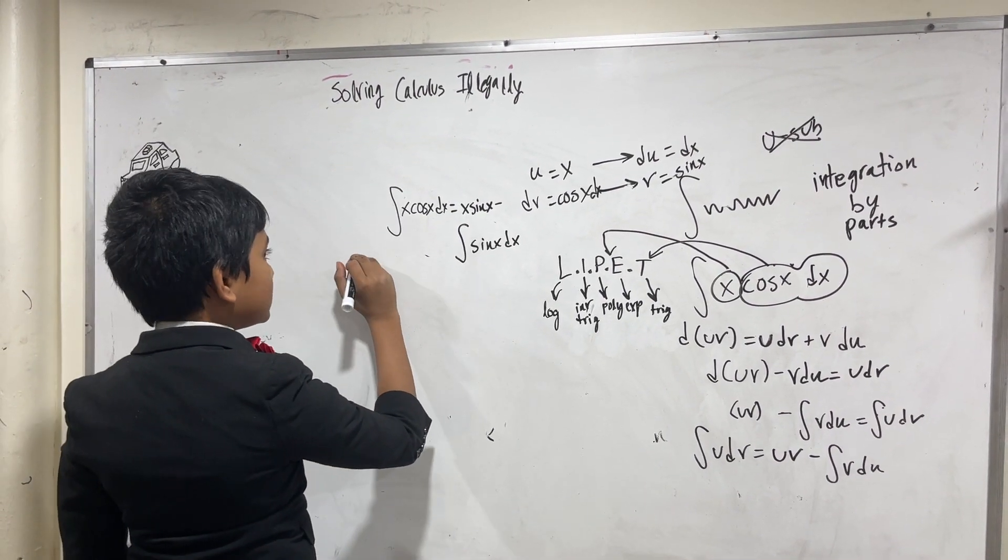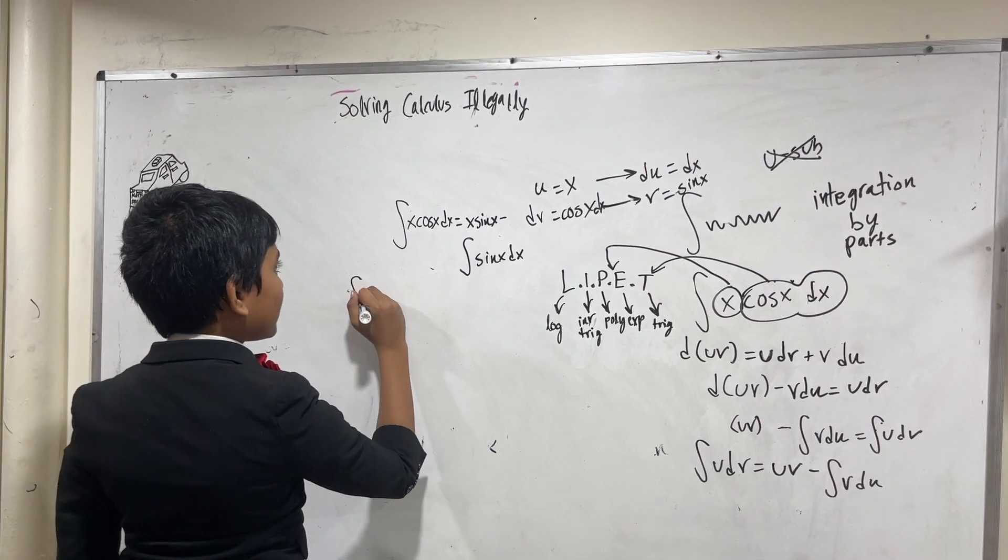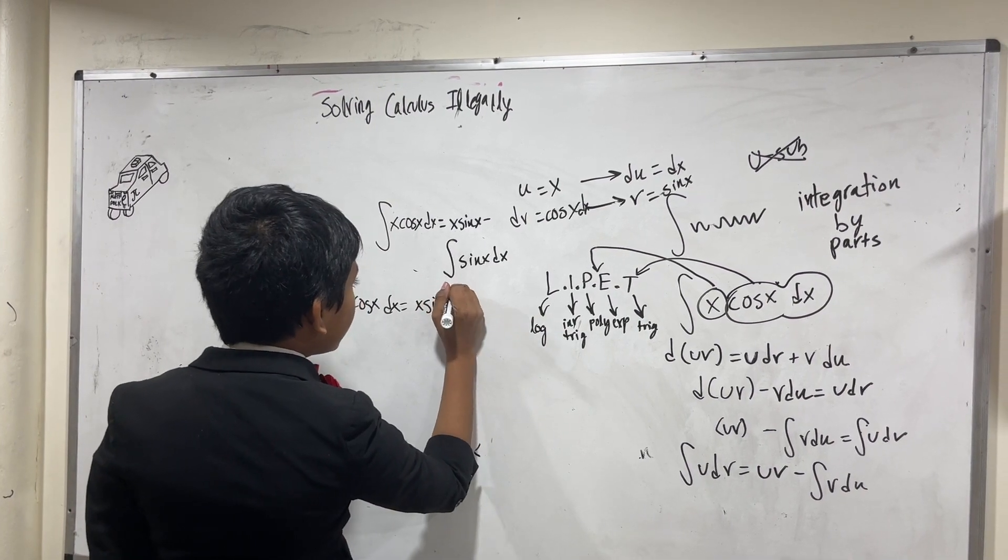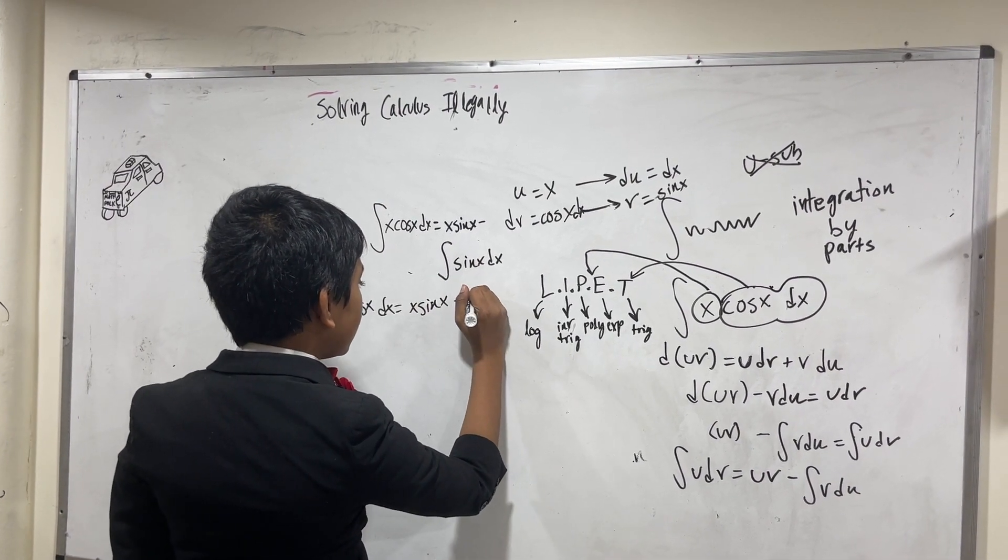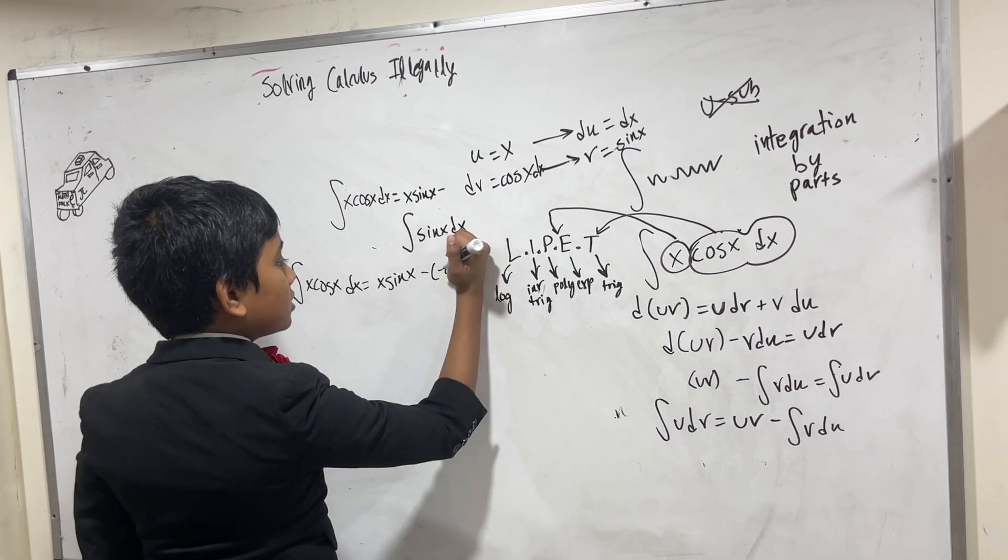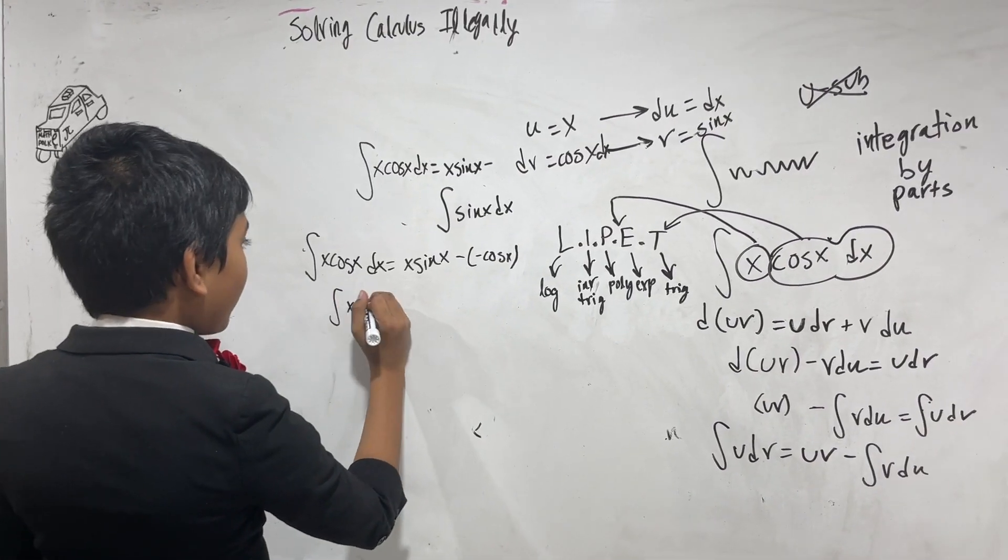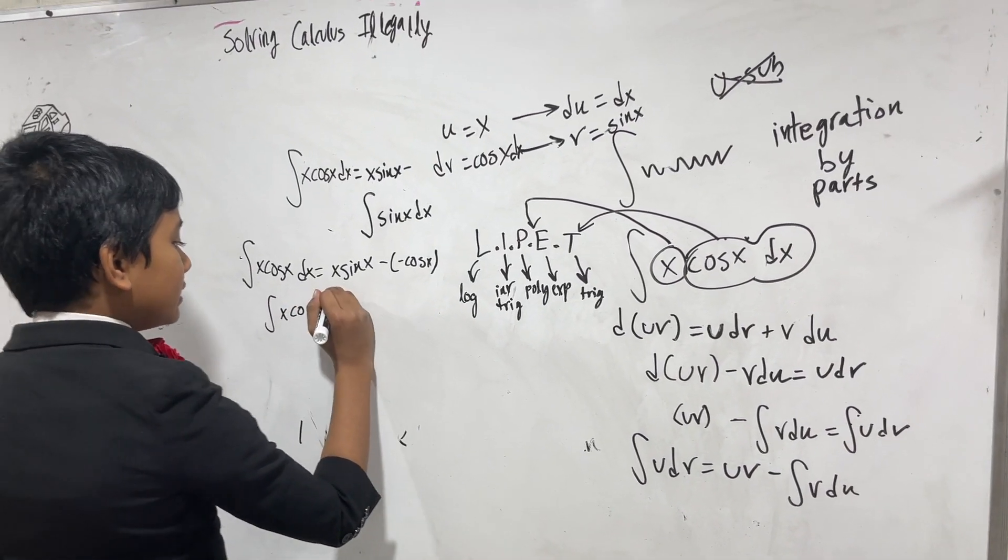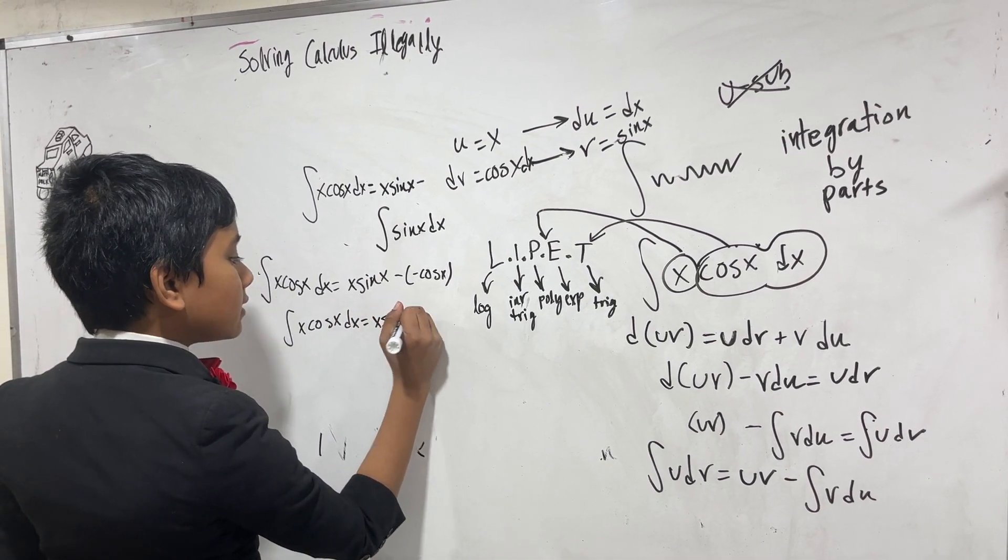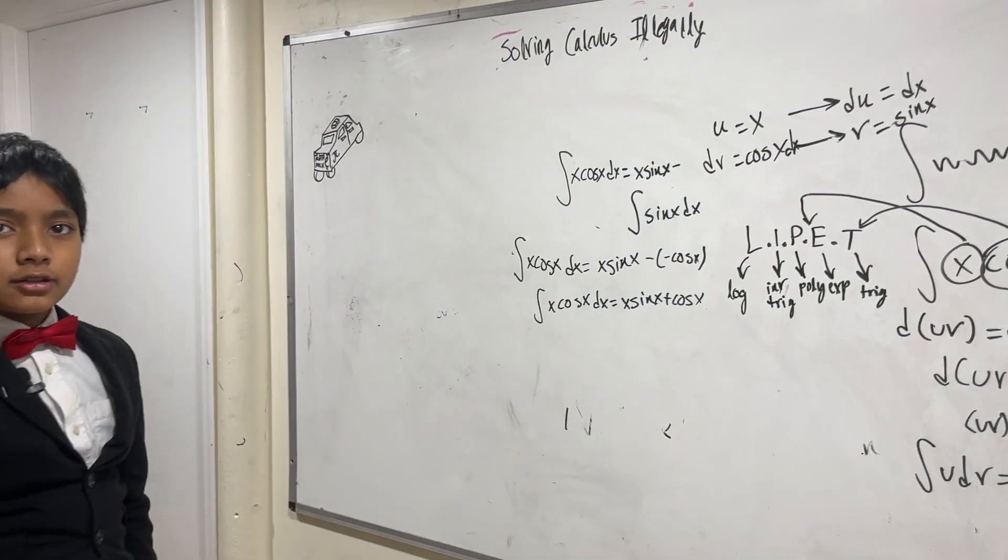The integral of sine x dx is obviously minus cosine x. So the integral of x cosine x dx is equal to x sine x minus the integral of this is minus cosine x. You've got to remove the dx, and so that means the integral of x cosine x dx is equal to x sine x plus cosine x.